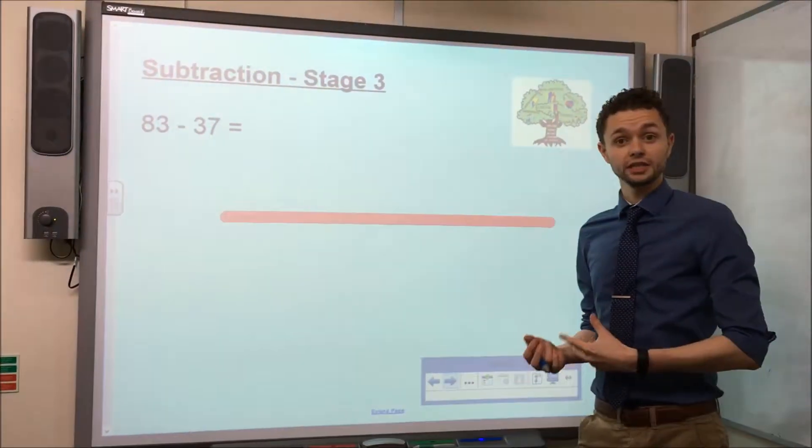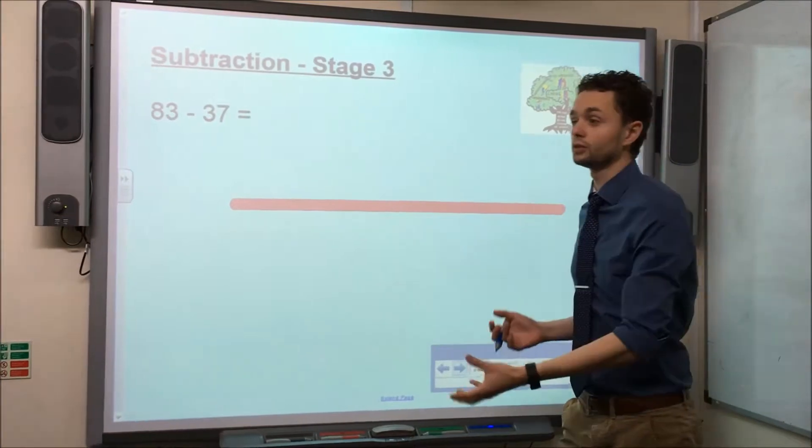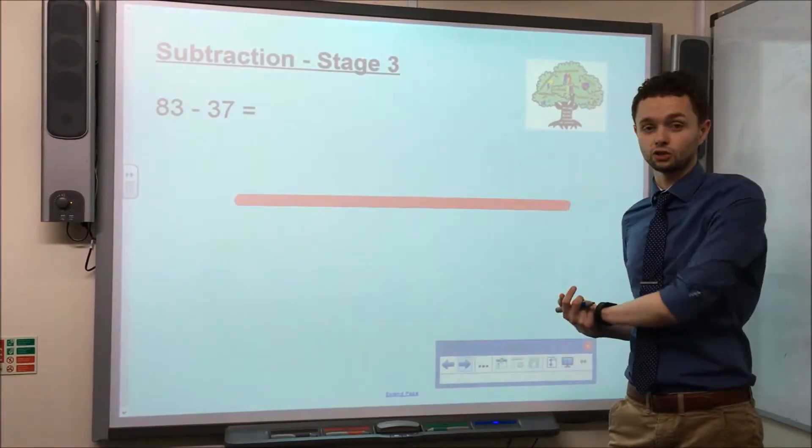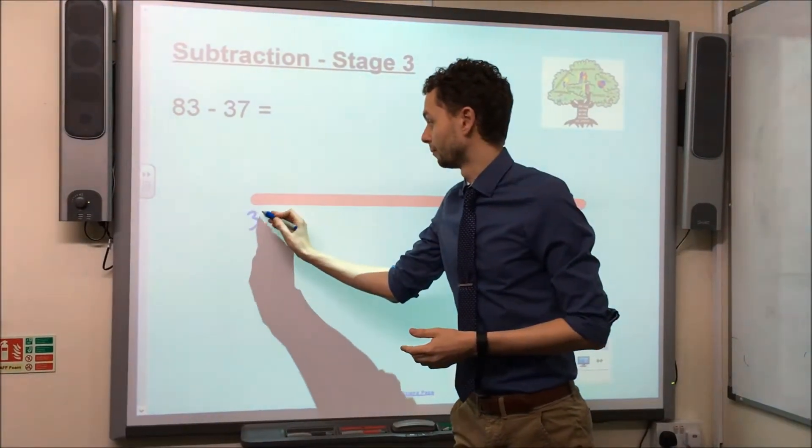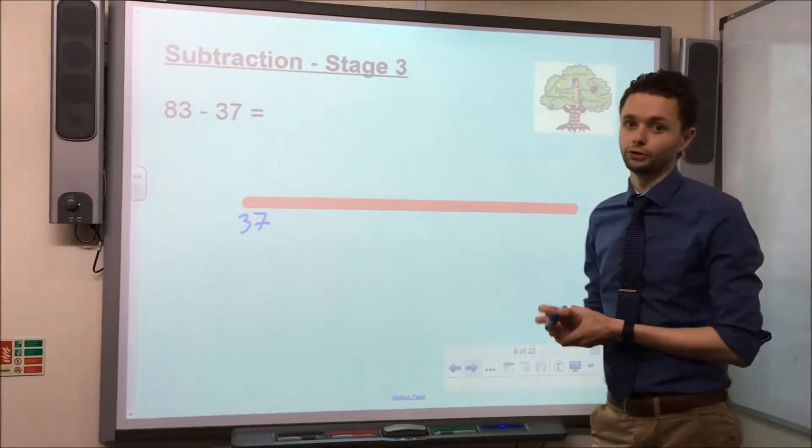Stage 3 works on the same principle as Stage 2 in that it involves counting up to a number even though it is subtraction. So our starting point is to take the smaller number, 37, and place that at the beginning of the number line.